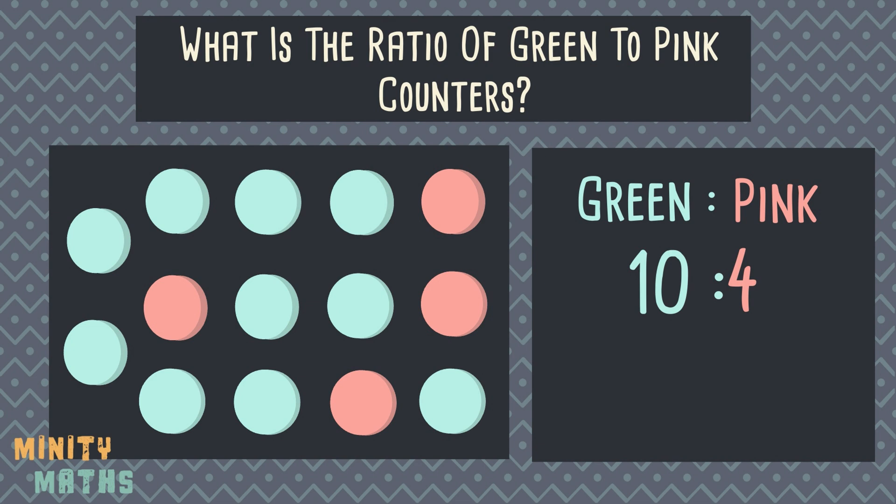Just like with fractions, we can actually simplify ratios to make them easier to read, compare, and visualize. To do this, we have to divide each number in the ratio by the same factor — any factor that will divide into all numbers. We must do the same to every number in the ratio to keep the proportion correct. The easiest way is to find the highest common factor of all numbers in the ratio. This is the biggest number that will divide into all of the numbers without creating a decimal. So let's simplify this ratio of the counters using its highest common factor of 2.